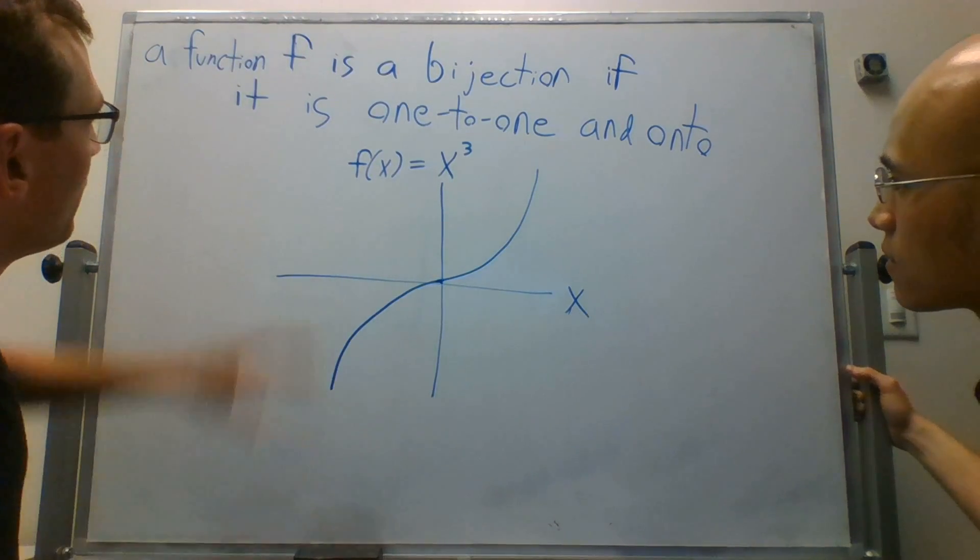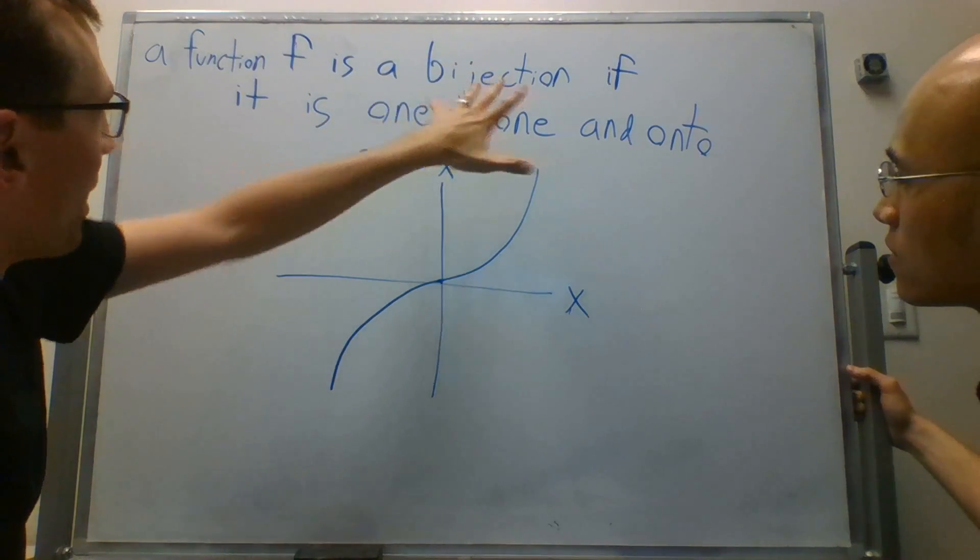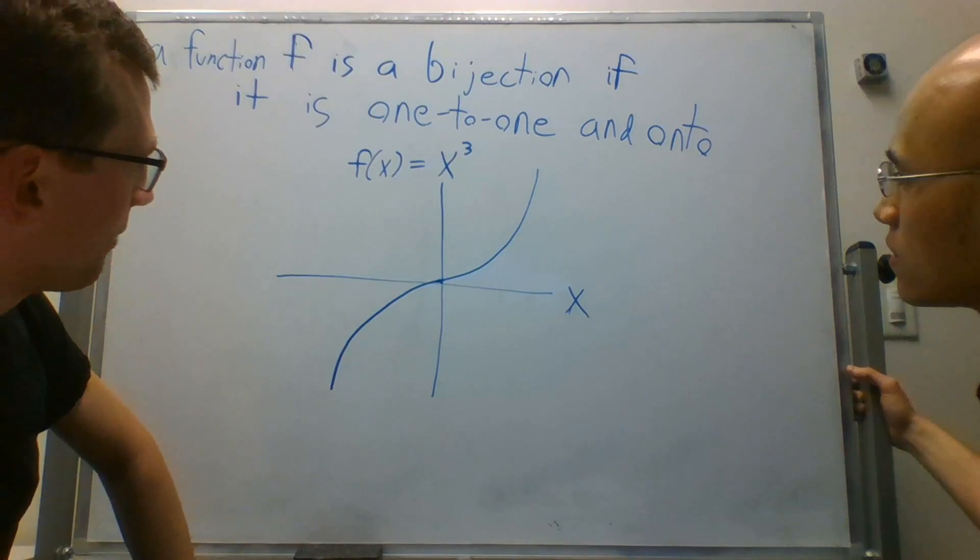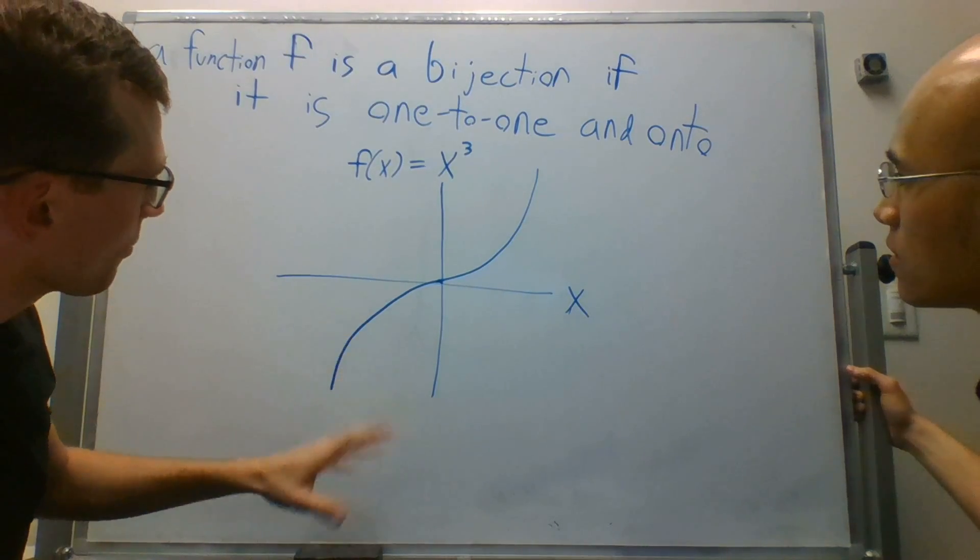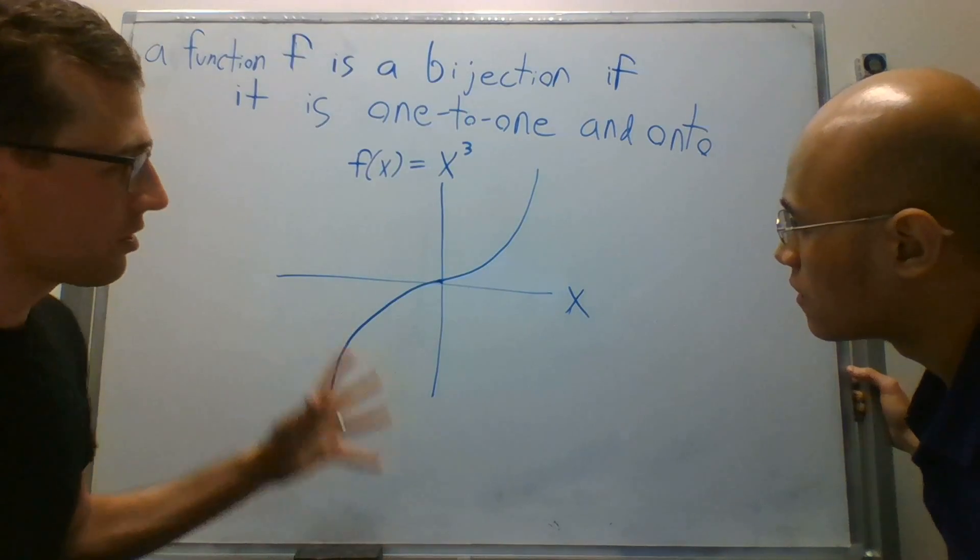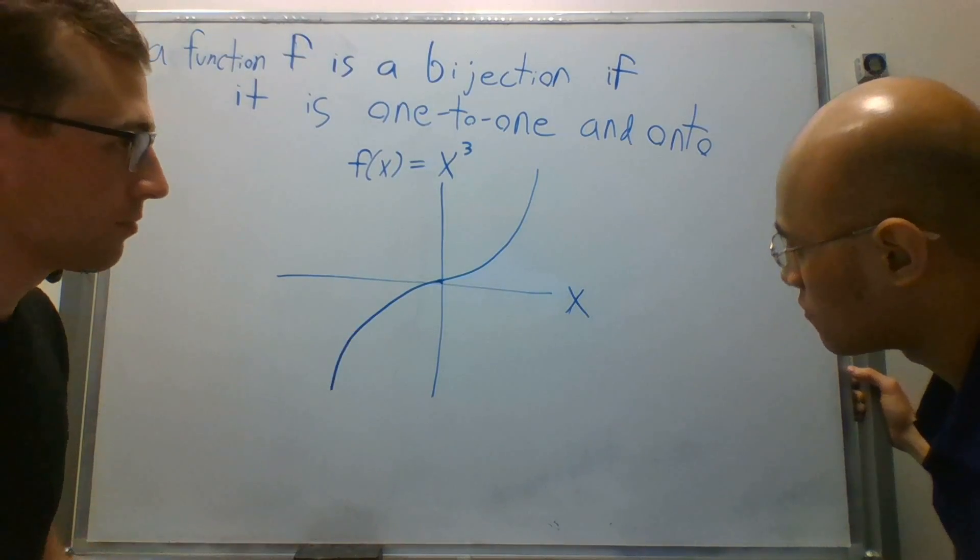So let's go through this. Is this function a bijection? Okay, well, let's check the definition. It's a bijection if it is one-to-one. Okay, well, let's look at that. So is it one-to-one? Now, remember, something is one-to-one if f of x being equal to f of y implies x equals y. Right.